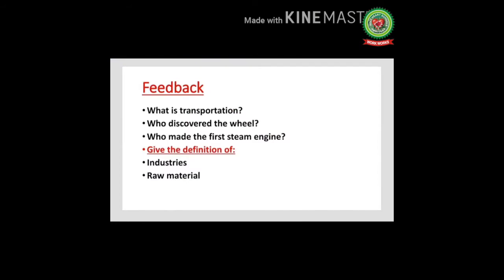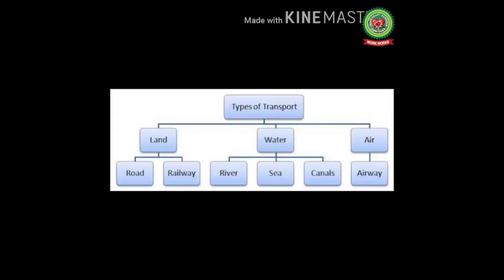Now I'll take the feedback of what we have done yesterday. First question: what is transportation? Second, who discovered the wheel? Third, who made the first steam engine? Tell me the definition of the words 'industries' and 'raw material'. I hope you all are able to answer these questions. In this picture you can see there are three types of transport: land, water, and air.